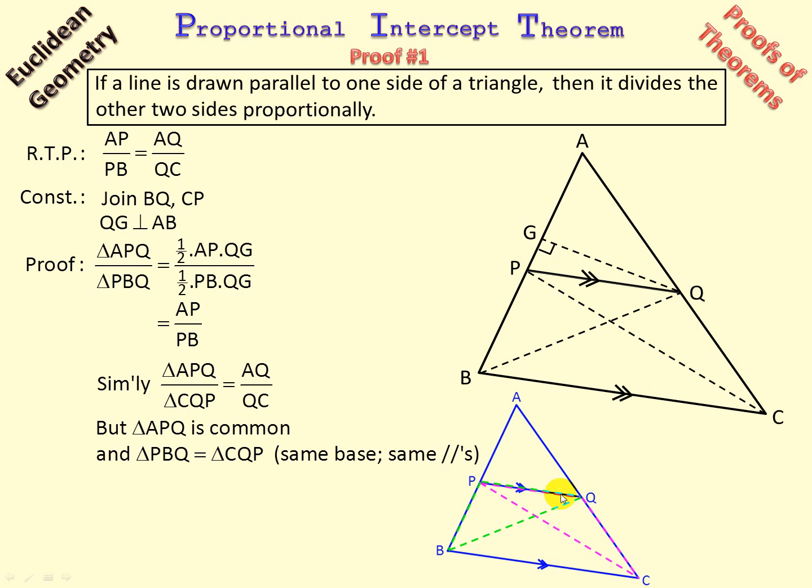Have a look, PBQ equals CQP. There is the setup there that we had earlier. The green and the mauve triangles, they are equal because of same base, same parallels. So we have that common and that is equal to that, which means this bit is equal to that bit, which means that equals that. And there is our proof.